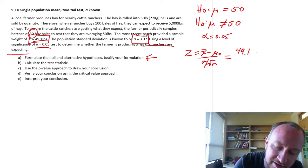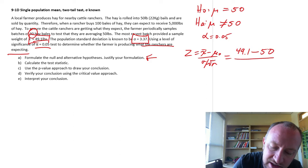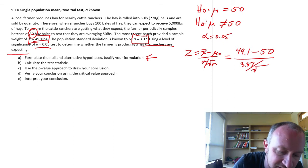49.1 is our sample mean. Our hypothesized value is 50. Sigma is 3.37. Divided by the square root of our sample size. Up here is 30.